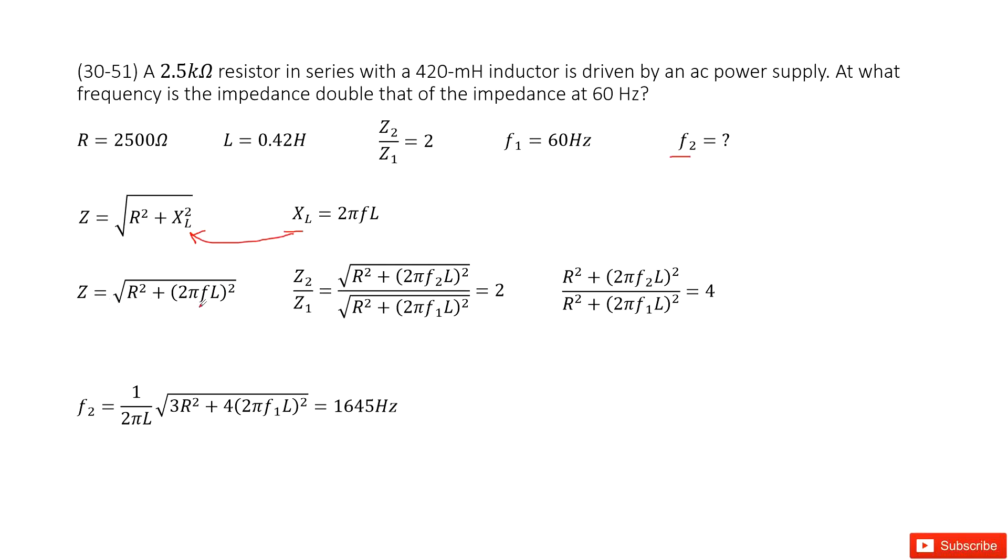We can input the inductance inside. We get the equation that looks like this one. Now the impedance Z is a function of F. As we know, the final impedance over initial impedance equals 2.